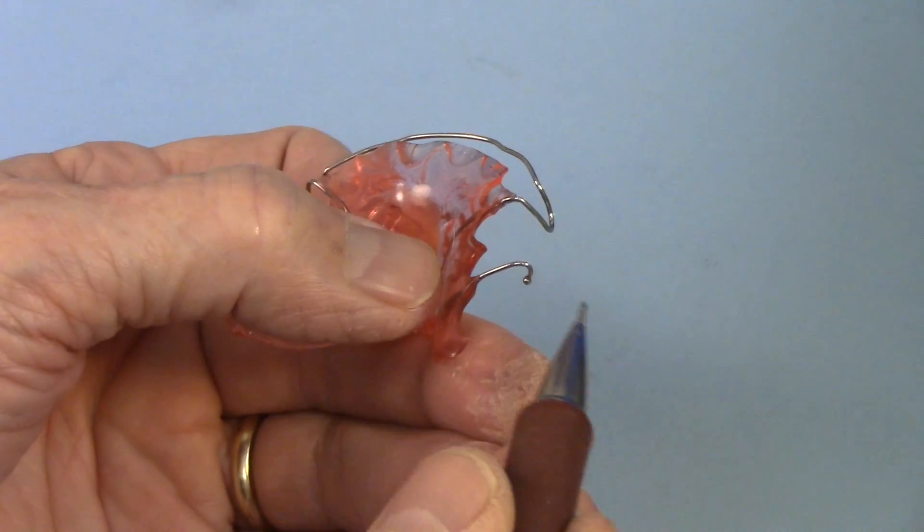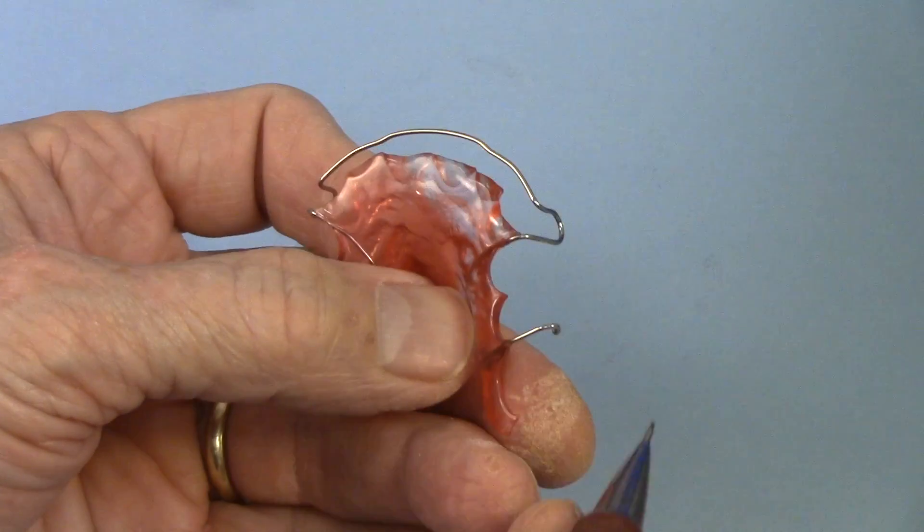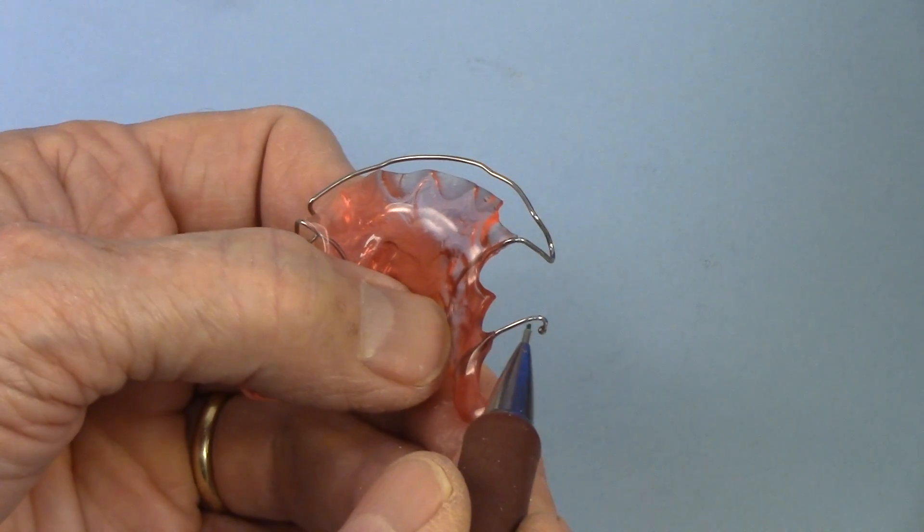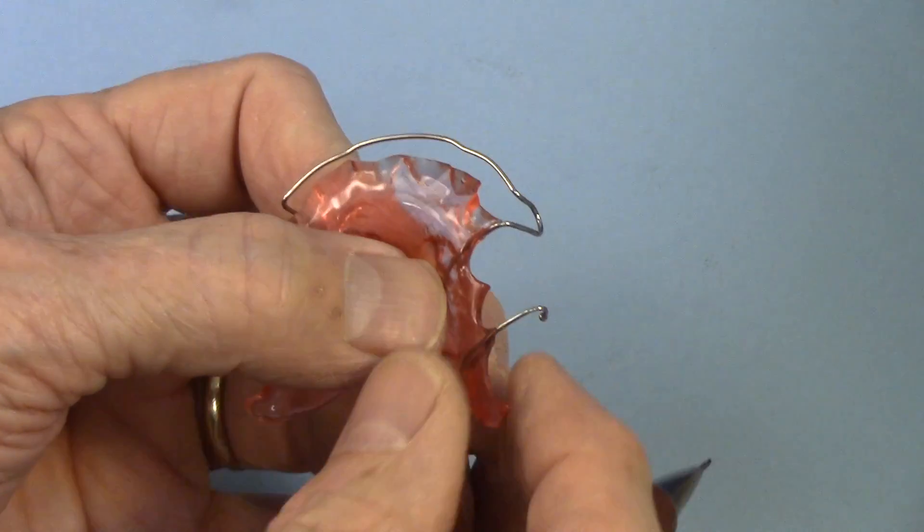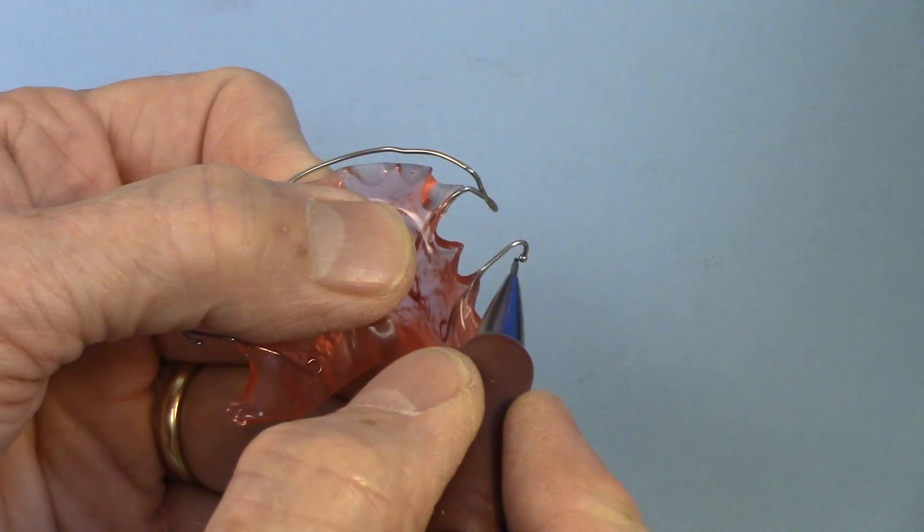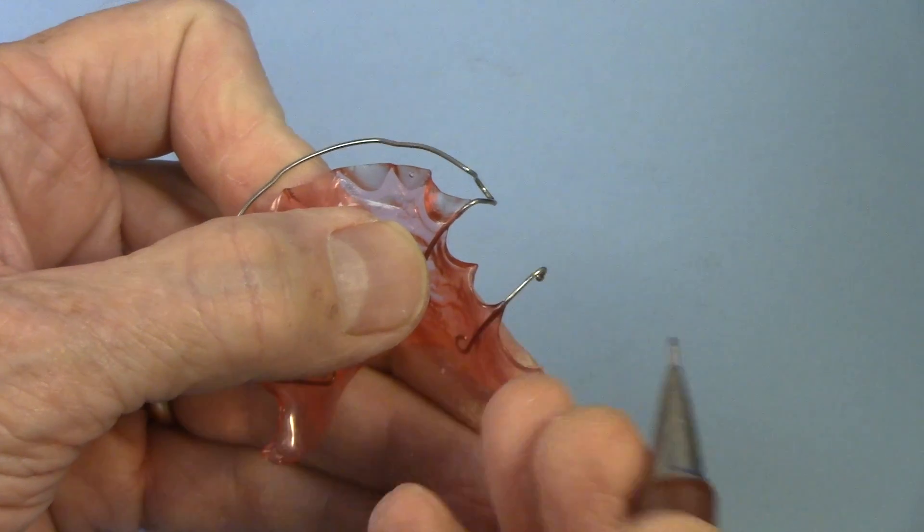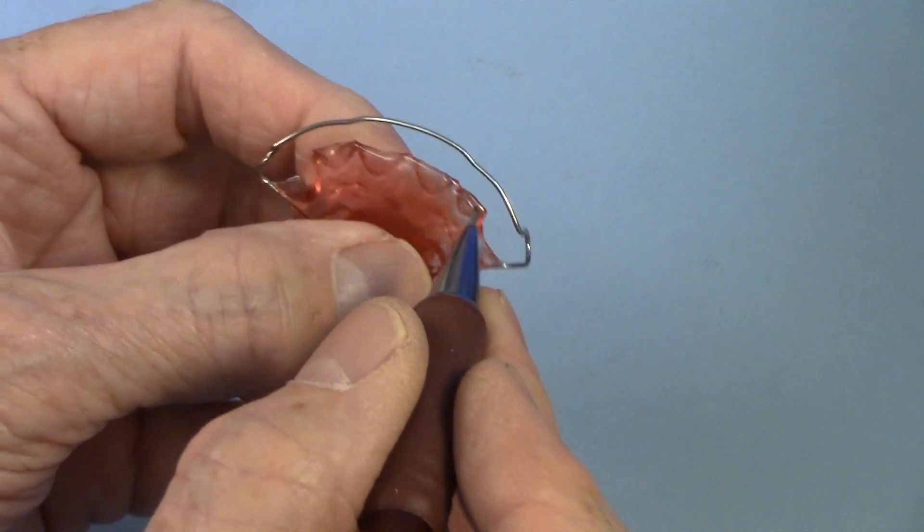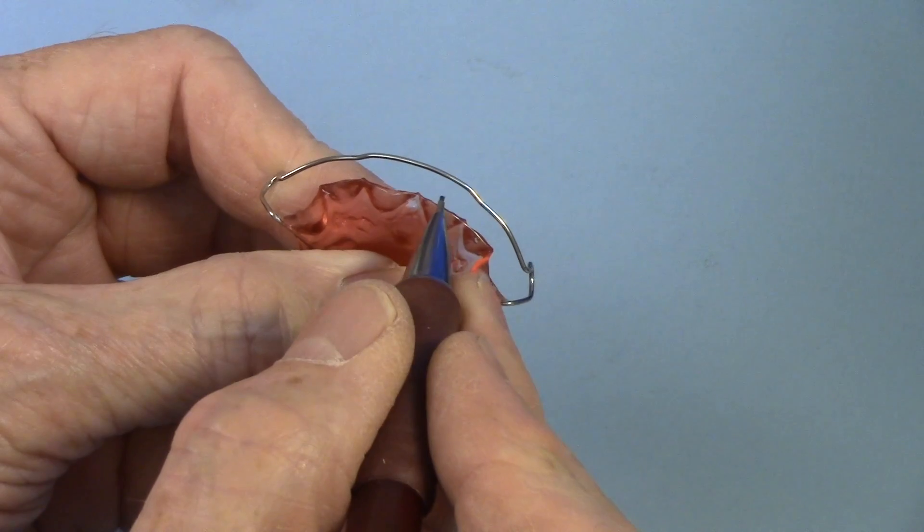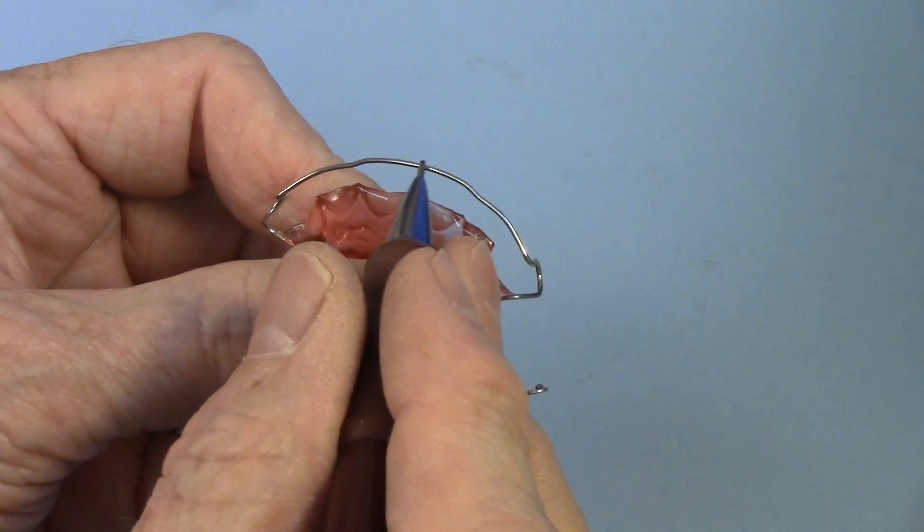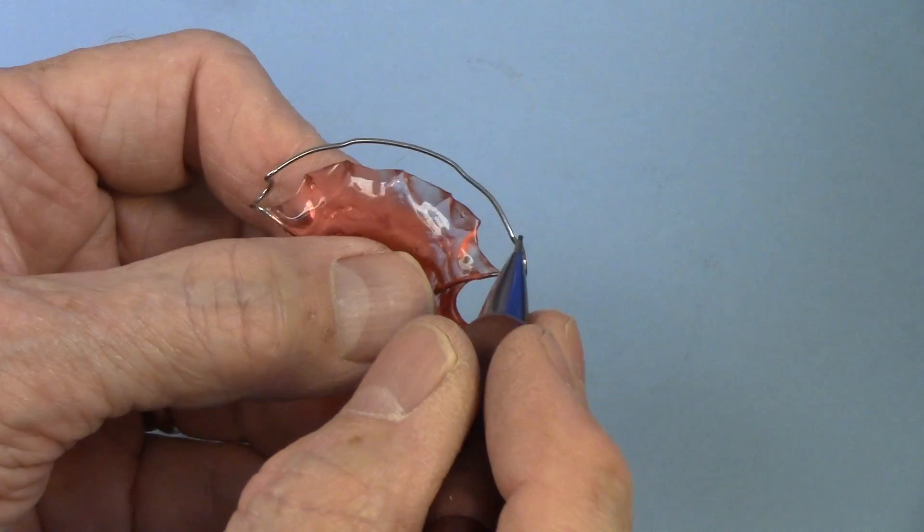Okay, so if you've got a retainer and it's got a ball clasp and a labial bow, you don't have any choice on the ball clasp. It comes as it is and it's probably about a three-quarter temper nickel-chromium wire. It's got a little ball attached to it. So you have to go with what you can get from the manufacturer. But on the labial bow, you have choices. Now, if you have a tooth out of alignment and you need this wire to be springy to move that tooth back, of course, you're going to need something with a more springy temper to it.